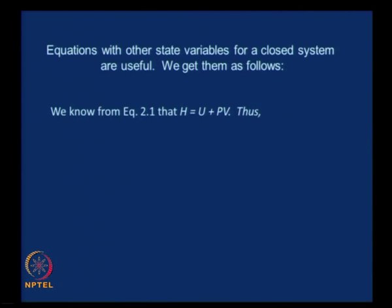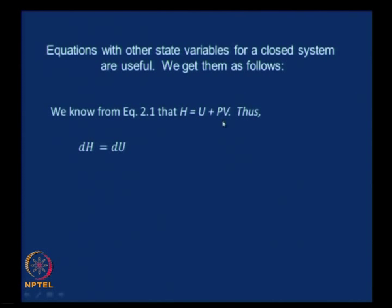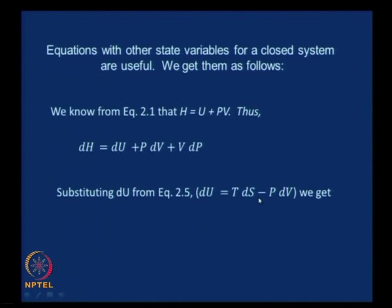For a closed system, from the definition of enthalpy H (equation 2.1), enthalpy is defined as U plus PV. Therefore, the total differential dH equals d(U + PV), which by the chain rule is dU plus P dV plus V dP. Since we already know dU equals T dS minus P dV (equation 2.5), substituting gives T dS minus P dV plus P dV plus V dP. The P dV terms cancel, leaving dH equals T dS plus V dP, which is equation 2.6.